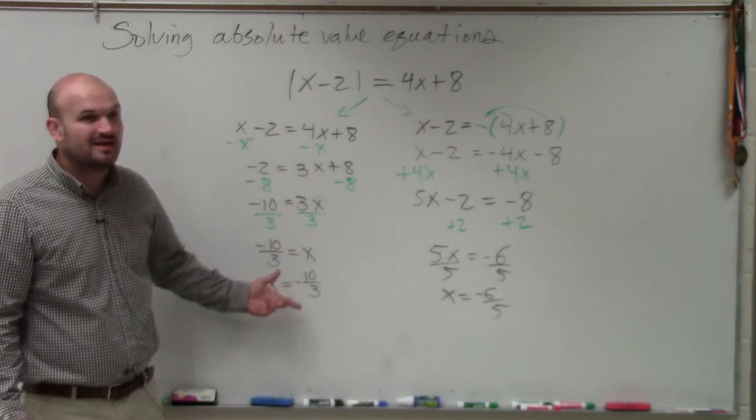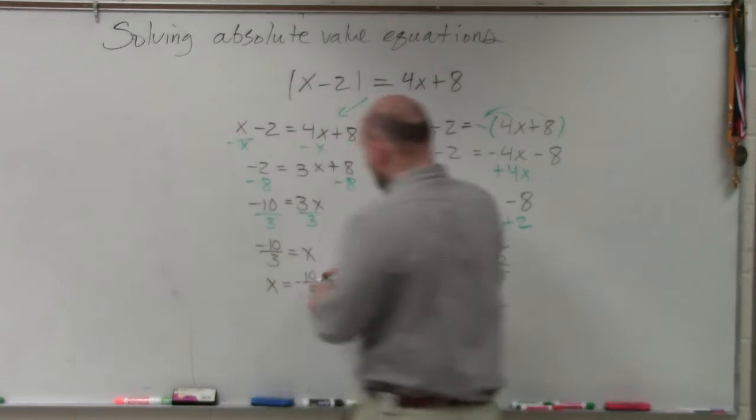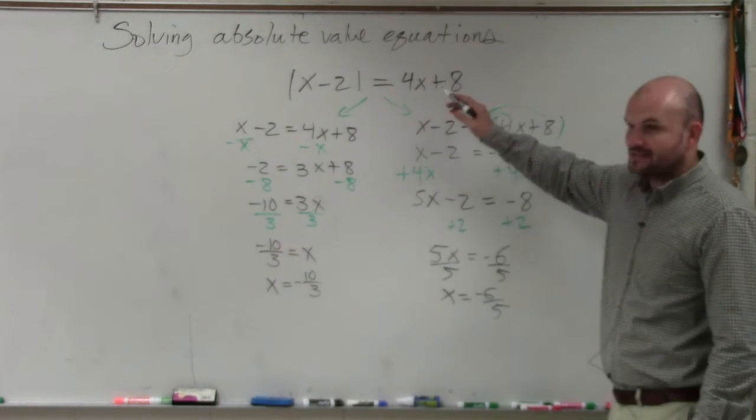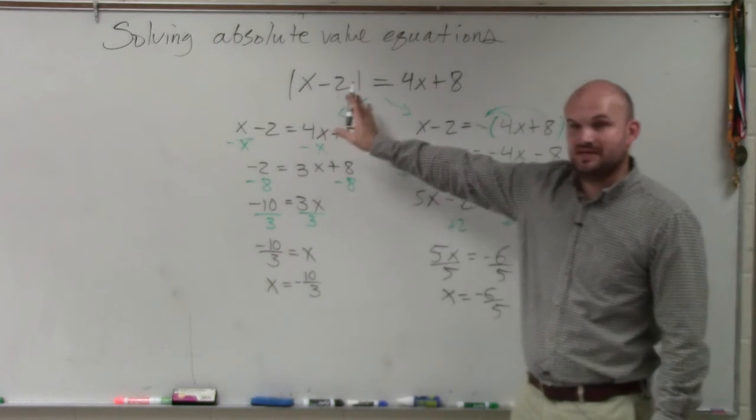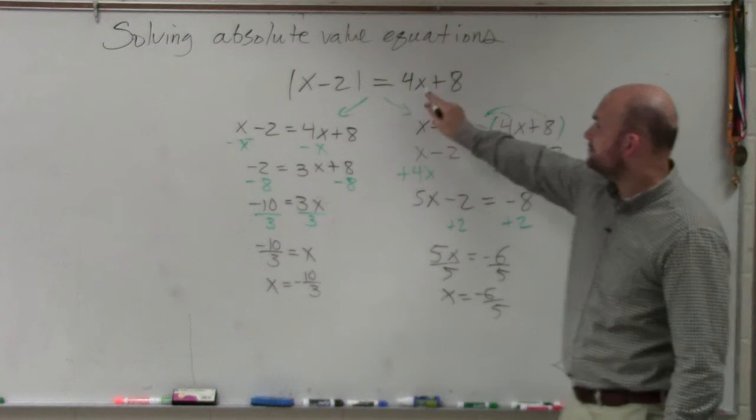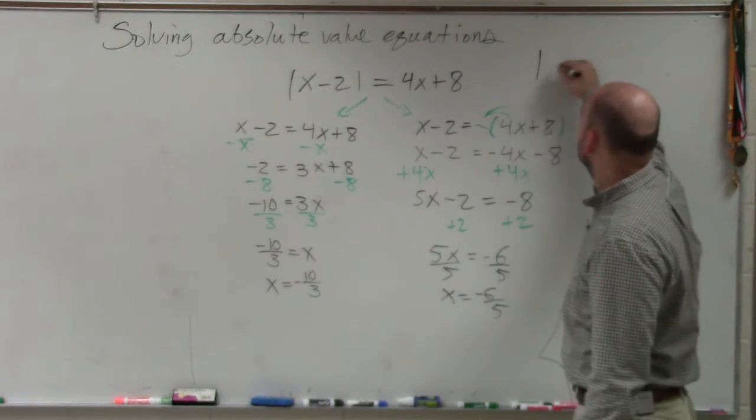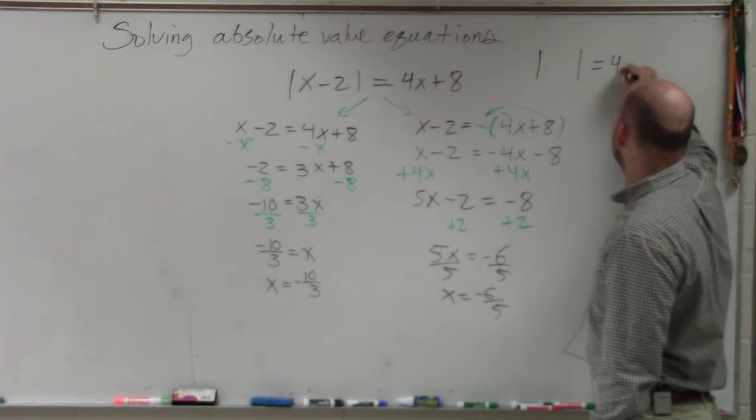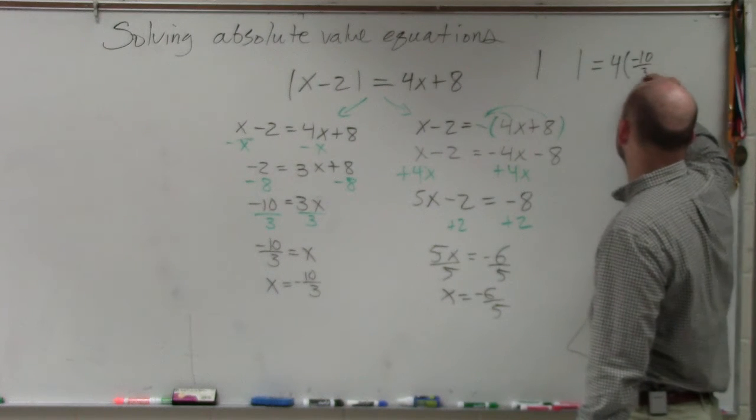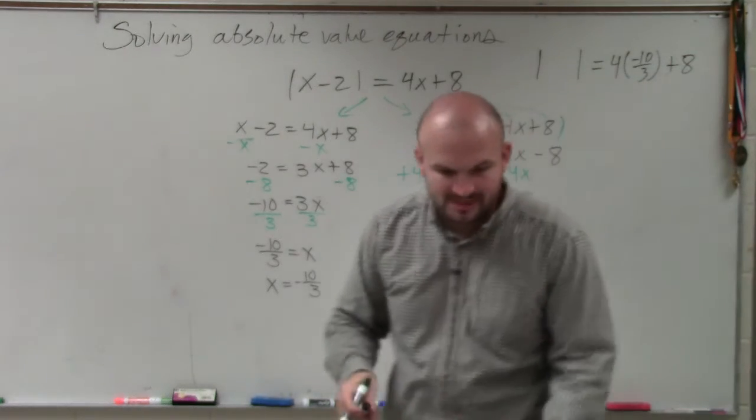This might be helpful, especially with this. You're going to want to plug them in. Now, you guys can see fractions. You're like, oh, this is not going to be fun, right? So let's just plug this answer in for x. And actually, before I even get to this, what I'm going to do is I already noticed something here. I'm going to plug x in for negative 10 thirds in for x right here. So I'm going to do absolute value equals 4 times negative 10 thirds plus 8.